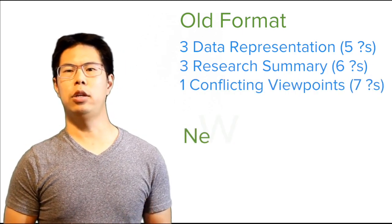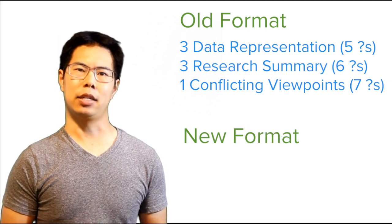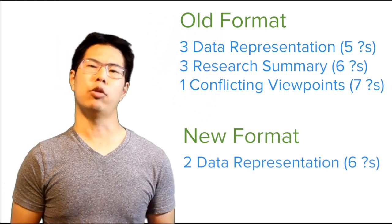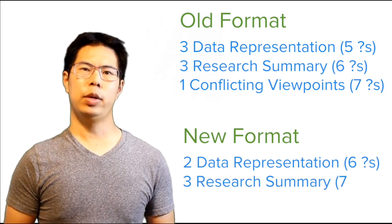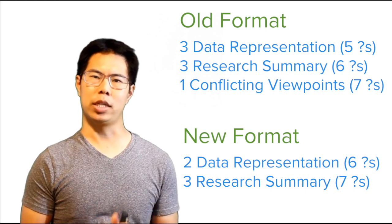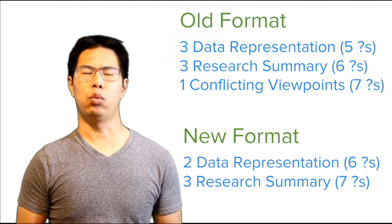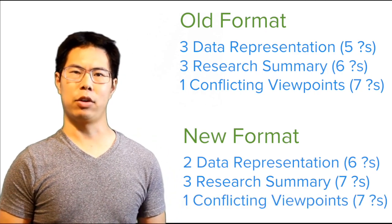And here's what the new format of the ACT Science Test looks like. There are now two data representation passages of six questions each, from five, three research summary passages of seven questions each, from six, and one conflicting viewpoints passage of seven questions.